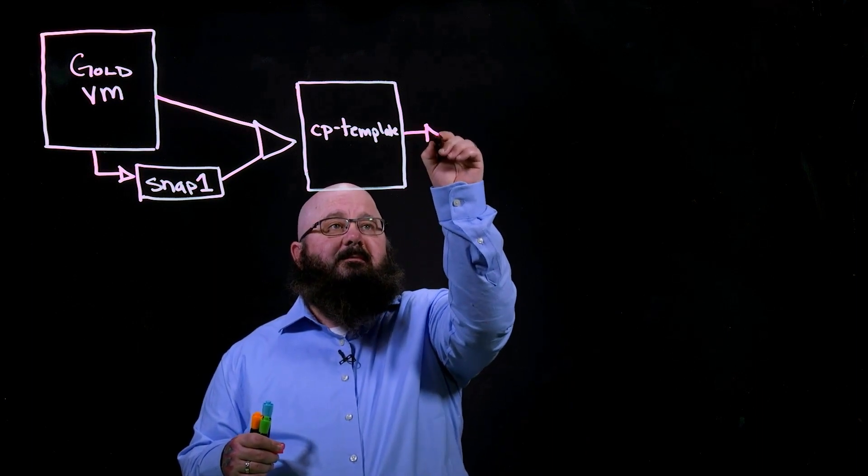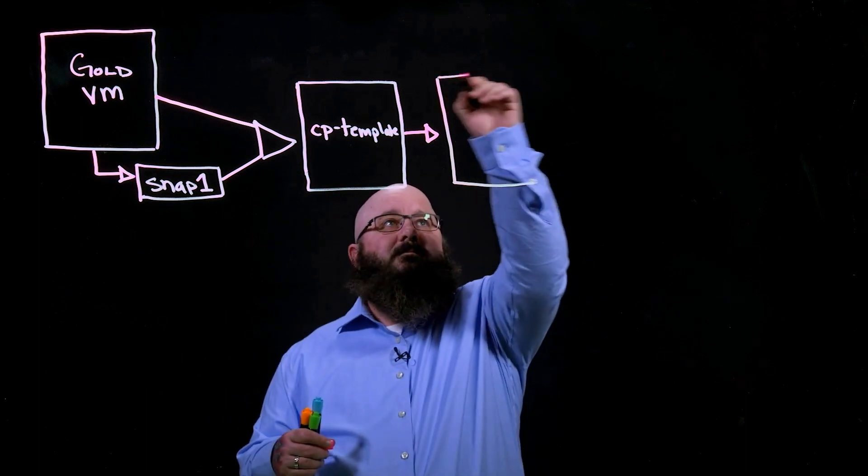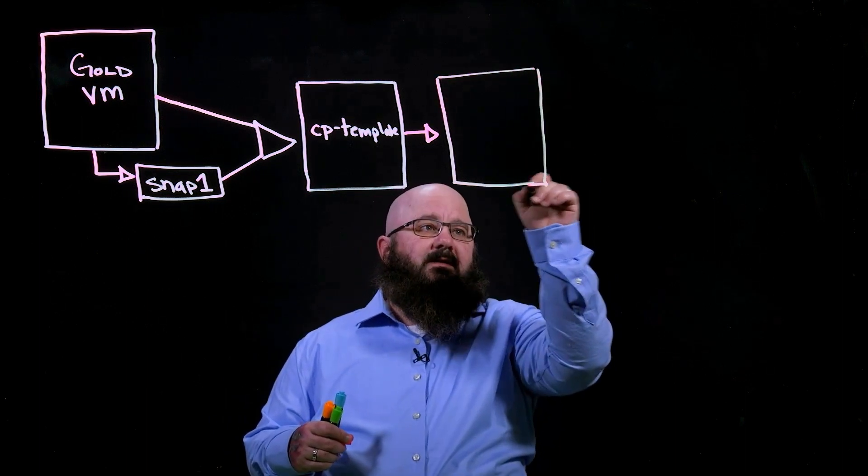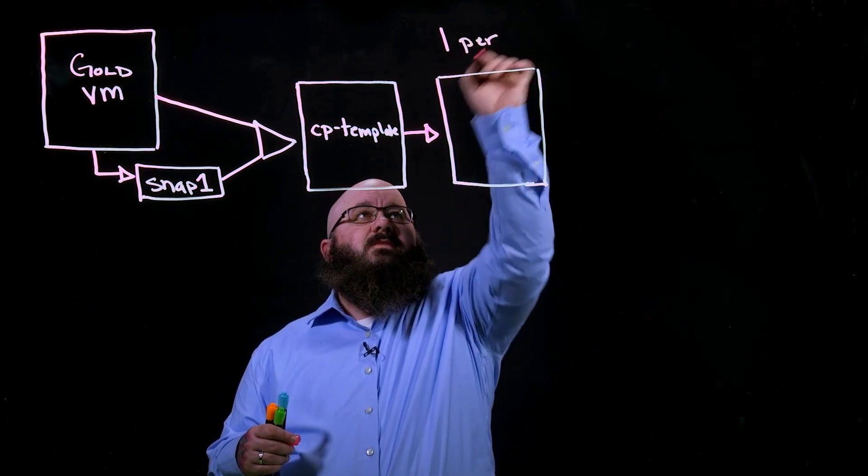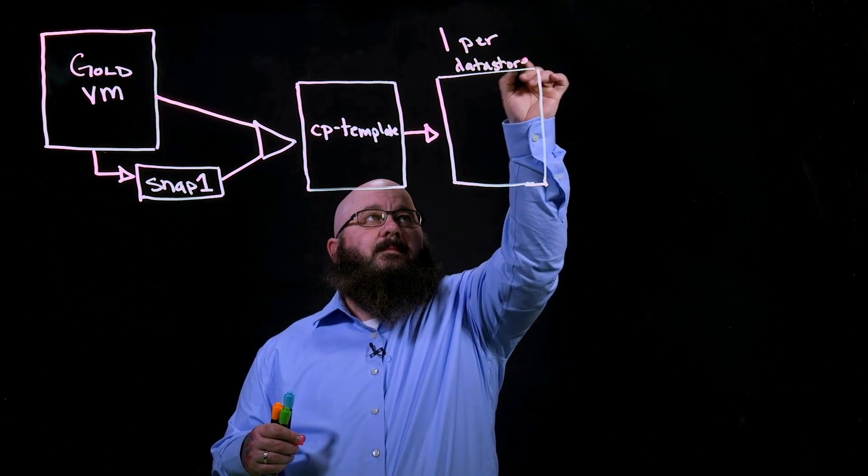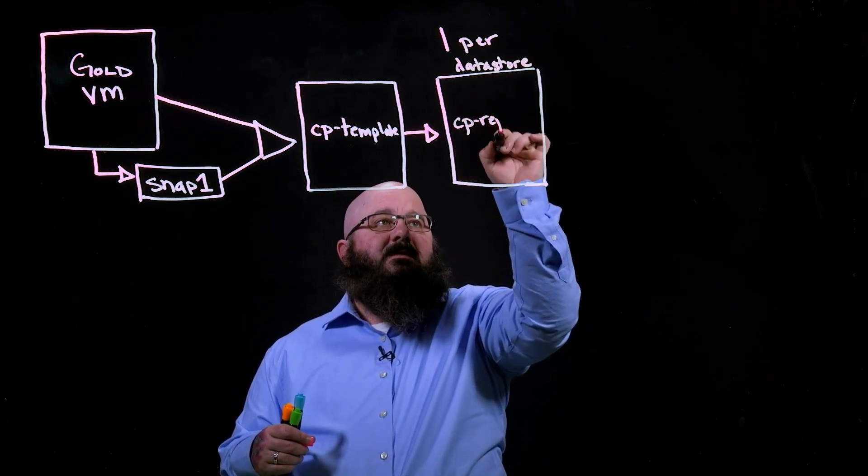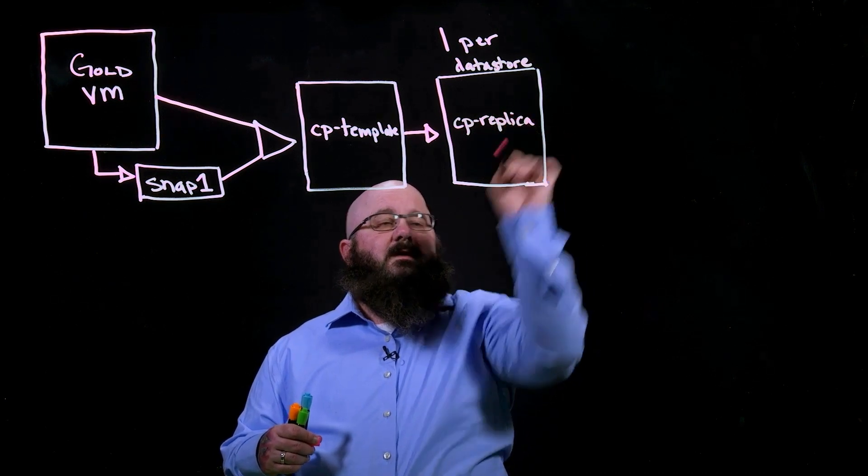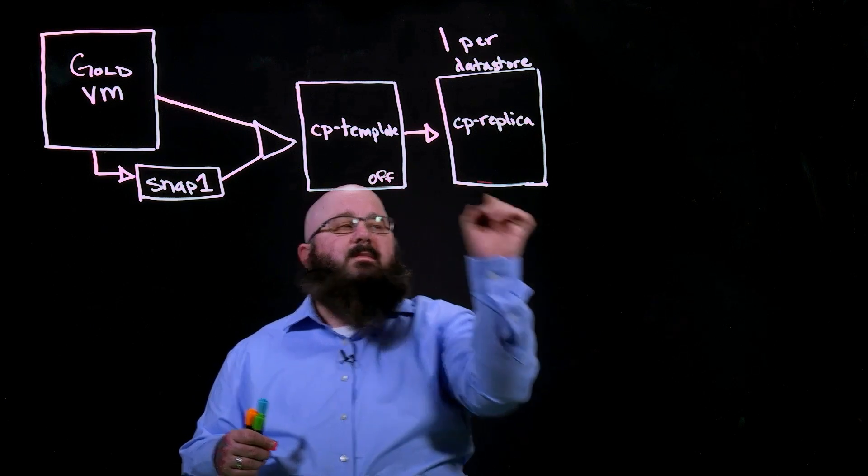We then go ahead and create our replica. Now, the thing to remember with the replica, and this is one of the important parts of it, is there is one per data store. So this is my CP replica. And both of these objects are powered off.